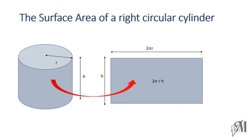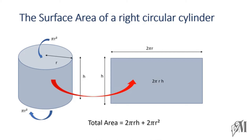This is the area of the curved surface of the cylinder. When you come to the other two surfaces, you have two flat circular surfaces. The area of each circle is πr². So the total surface area will be 2πrh + 2πr², because there are two circular surfaces.